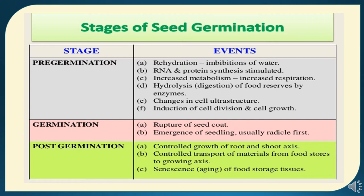The second stage is germination, under which there will be rupture of the seed coat and emergence of the seedling — usually the radicle comes out first. The third stage is post-germination, under which the first event is controlled growth of the root and shoot axis, second is controlled transport of materials from food stores to the growing axis, and third is senescence — the easing of food storage tissues.